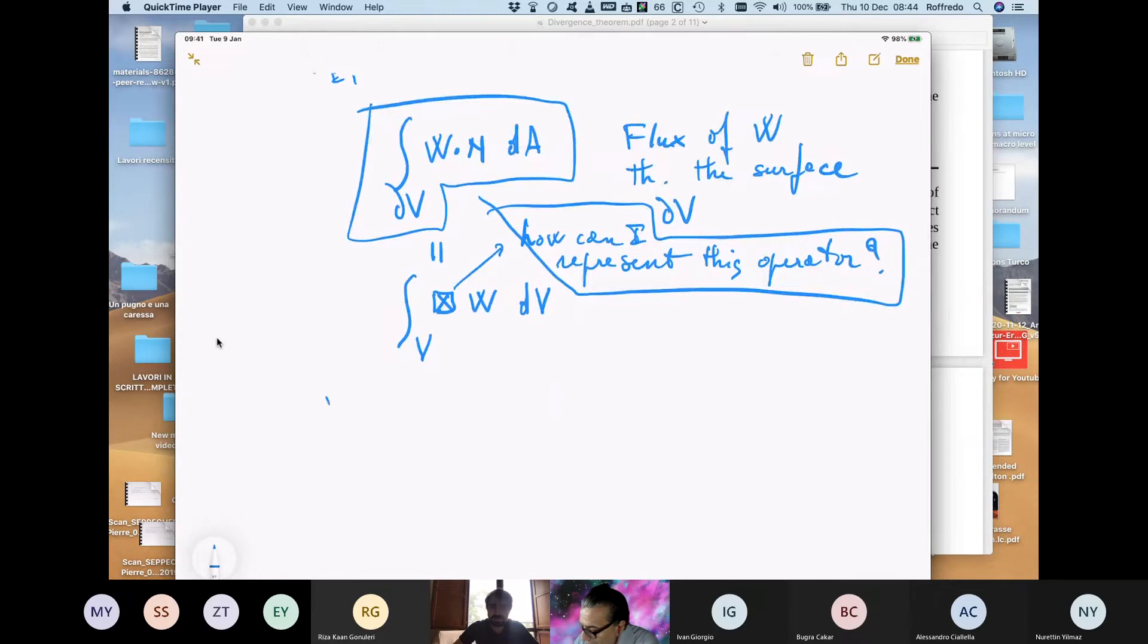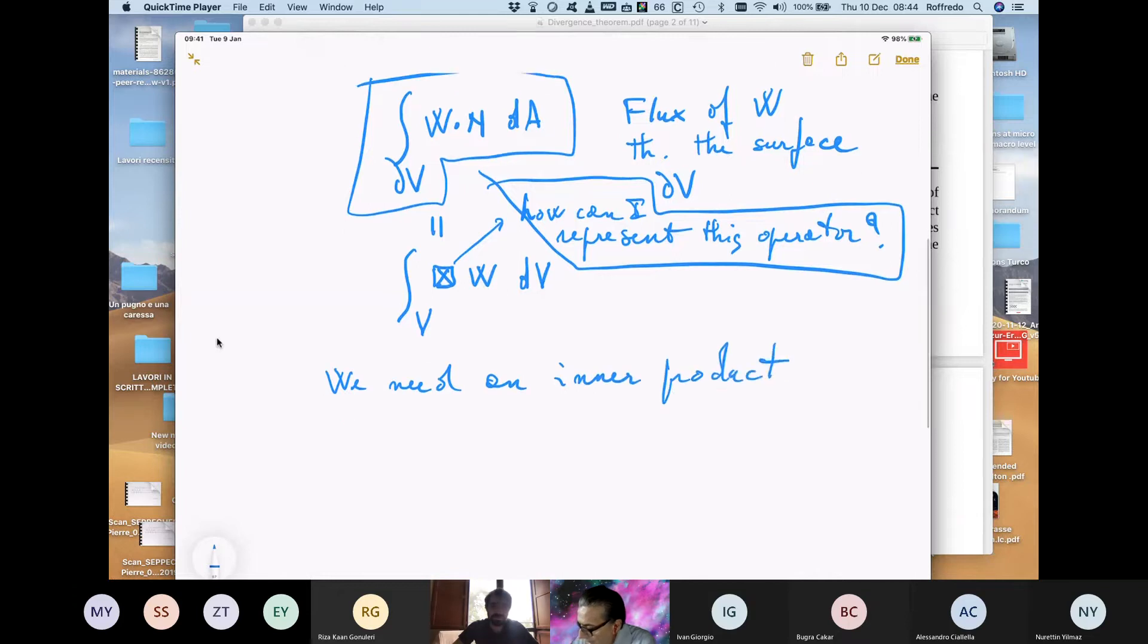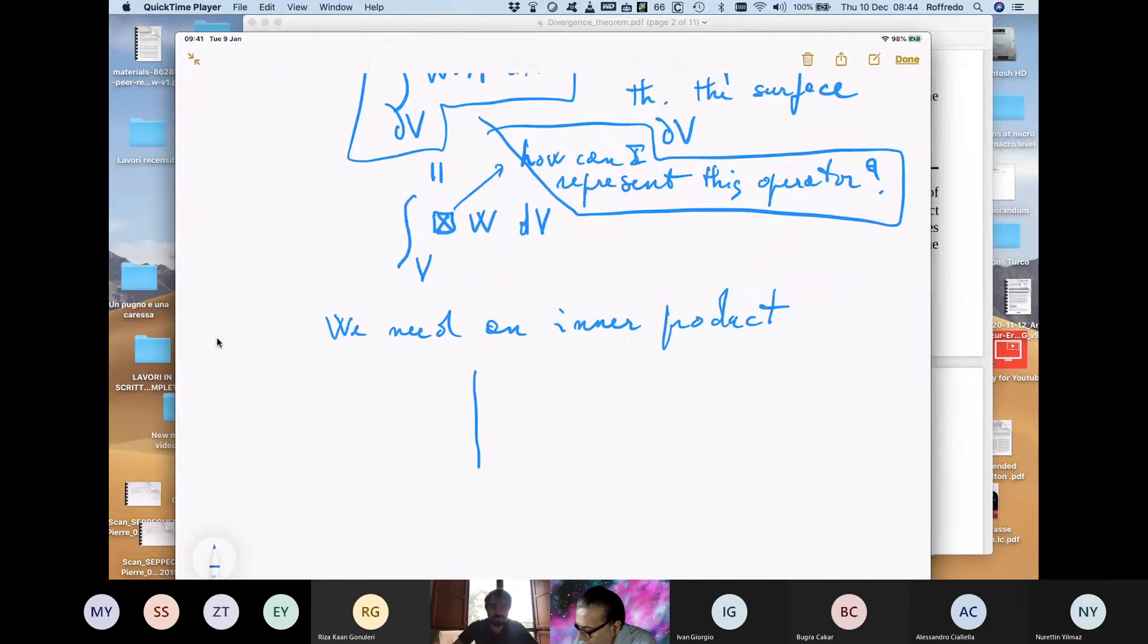We need an inner product. So what we have, the reason for which this is called a flux is this one.